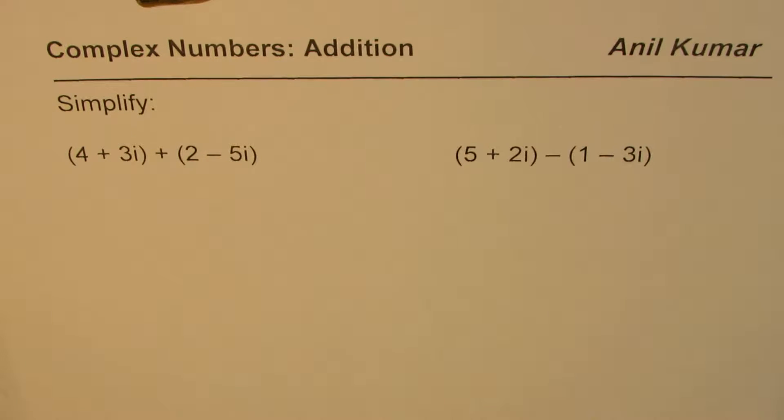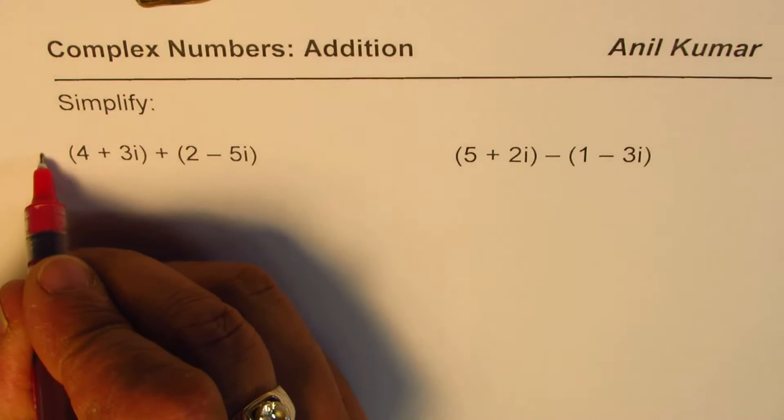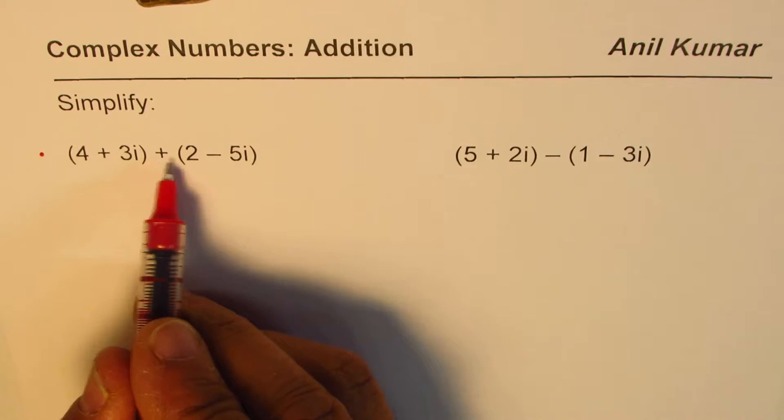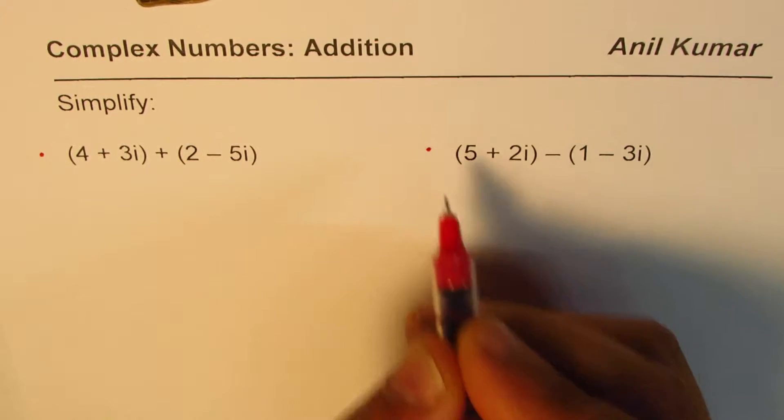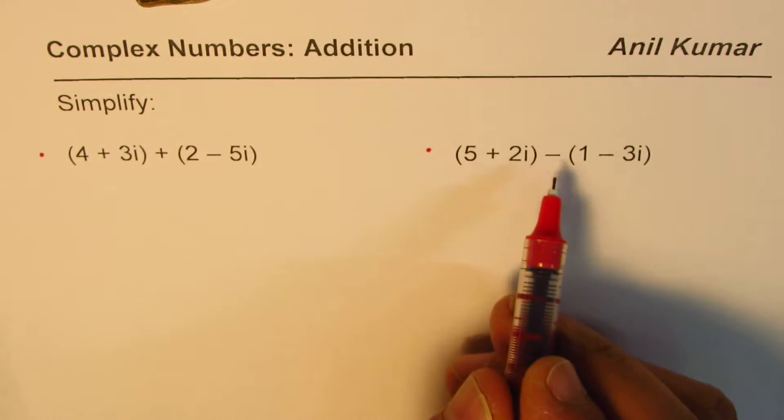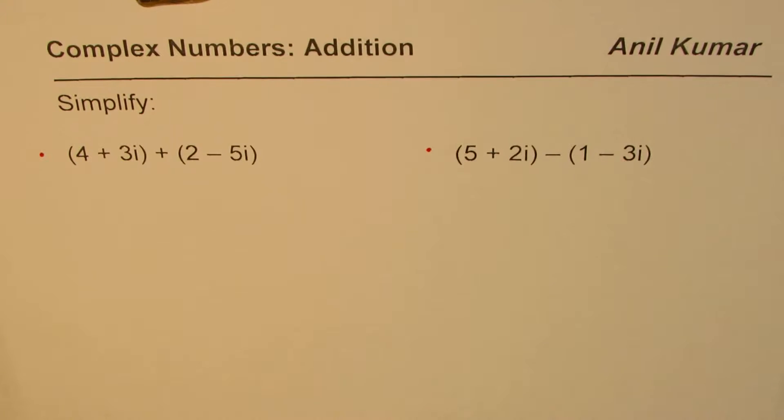I'm Anil Kumar, and in this video we'll understand how to add complex numbers. We have two examples here: (4 + 3i) + (2 - 5i) and (5 + 2i) - (1 - 3i).